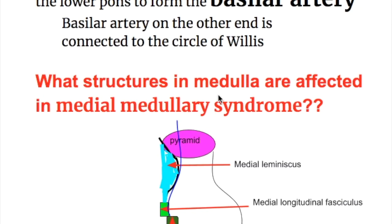What structures in the medulla are affected in medial medullary syndrome? Three structures are affected: the pyramid, the medial lemniscus, and the hypoglossal nerve. The hypoglossal nerve passes through after arising from the hypoglossal nucleus, the 12th cranial nerve nucleus.